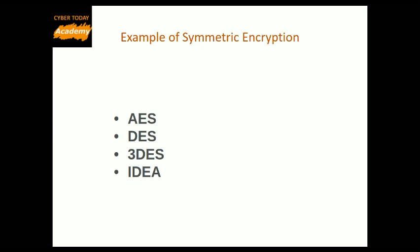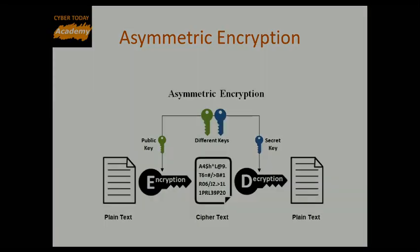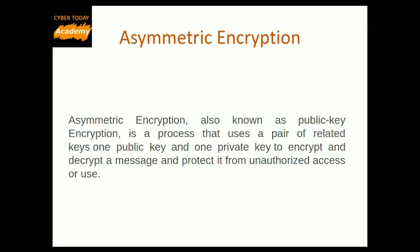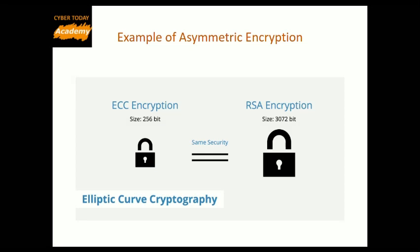Asymmetric encryption, also known as public key encryption, is a process that uses a pair of related keys — one public key and one private key — to encrypt and decrypt a message and protect it from unauthorized access or use. A public key is a cryptographic key that can be used by any person to encrypt a message so that it can only be decrypted by the intended recipient with their private key. A private key, also known as a secret key, is shared only with the key's initiator. Examples of asymmetric encryption include RSA and Elliptic Curve.